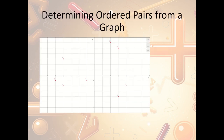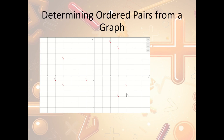Part of this is being able to plot points, but the other part is being able to recognize points once they're already graphed. In this case, I'm given some points and asked to find their ordered pairs. Let's look at point A: my x value is 3, and my y value is down 4, so it's negative 4. So point A is at x equals 3, y equals negative 4, giving me the ordered pair 3, negative 4.